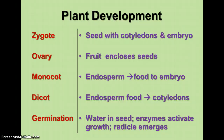When plants develop — talking about flowering plants and gymnosperm plants — the zygote is in the seed. The seed contains cotyledons and an embryo. The cotyledons are the seed leaves that provide nourishment for the growing embryo.